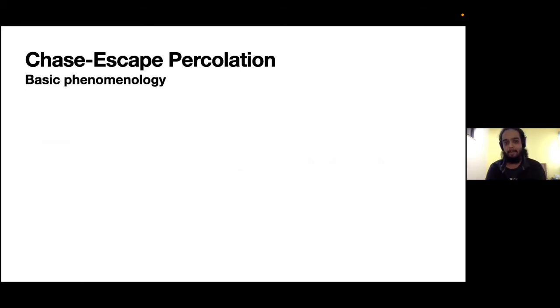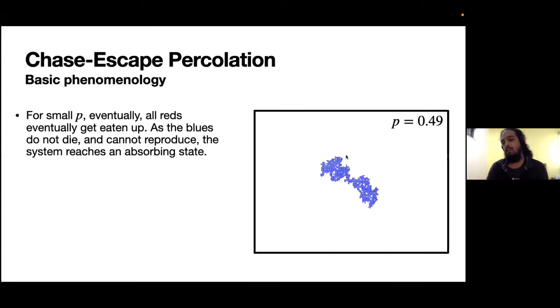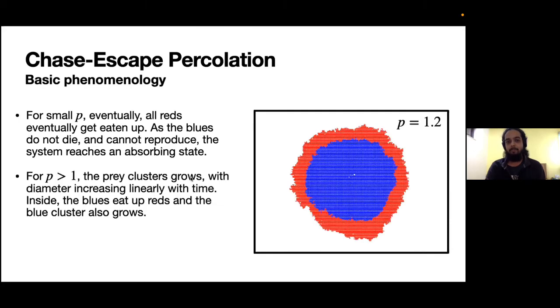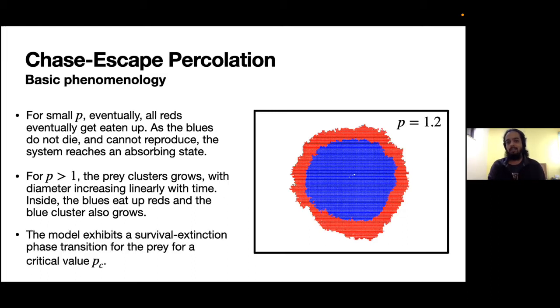The basic phenomenology of this model is fairly straightforward. For small p, eventually all the prey will be eaten up and the system will enter an absorbing state. If p is greater than one, both the prey and predator clusters grow larger with time. The model exhibits a survival-extinction phase transition for the prey at a critical value pc, above which the prey has a non-zero probability of surviving and below which it dies.